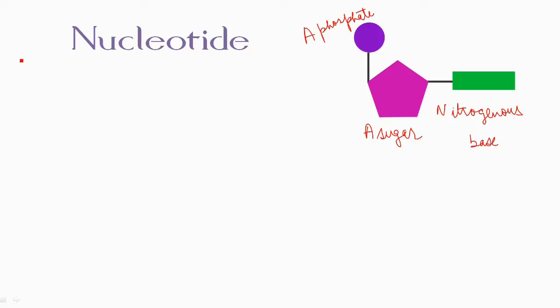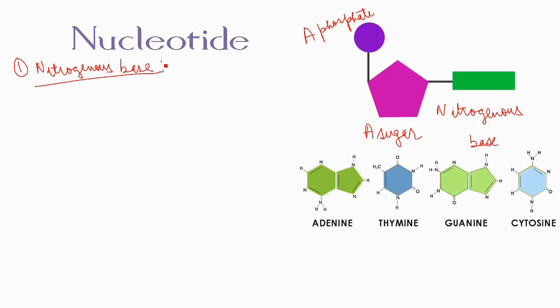First of all, we will discuss the nitrogenous base. There are four types of nitrogenous bases: adenine, thymine, cytosine, and guanine.